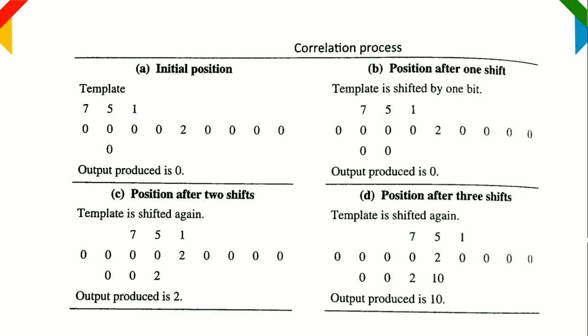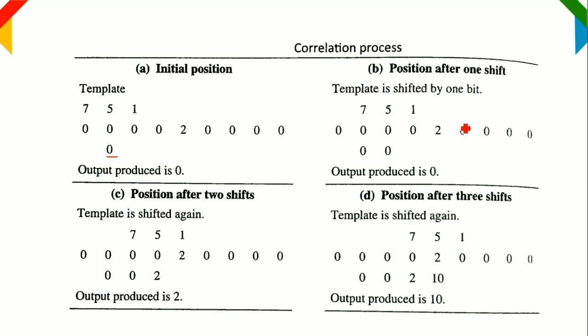Now we will go for the correlation process. In this correlation process, we are not rotating the kernel. The kernel given in the problem is 7, 5, 1, and the same kernel is used directly in the correlation process. The rest of the process is the same as in convolution: 7×0 + 5×0 + 1×0 = 0, assigned to the center pixel, and we continue shifting the template.